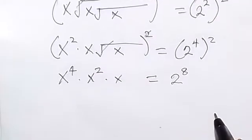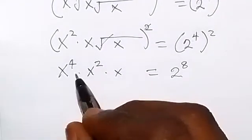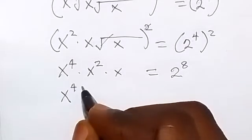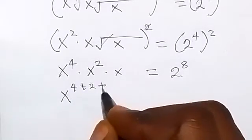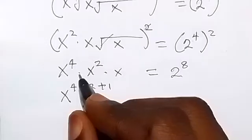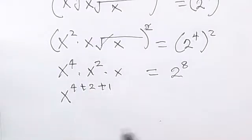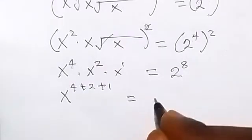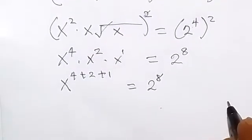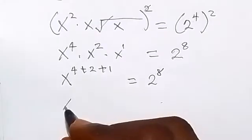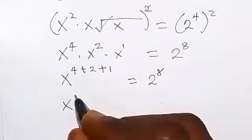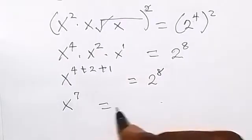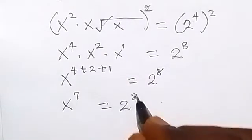Now we can add the powers here: x raised to the power 4 plus 2 plus 1, because they are multiplying with the same base. Adding the powers together equals 2 raised to the power 8. So this gives us x raised to the power 7 — since 4 plus 2 plus 1 is 7 — equals 2 raised to the power 8.